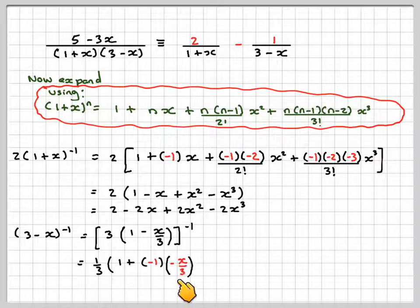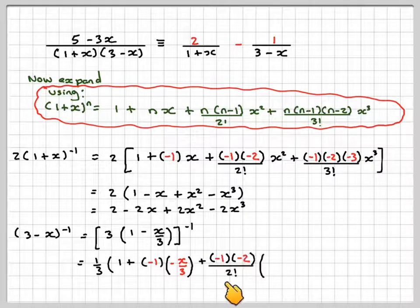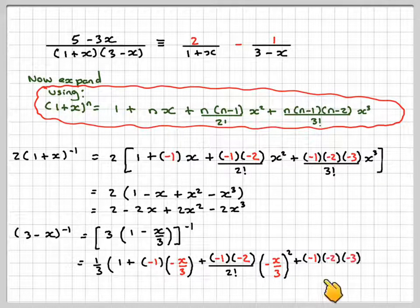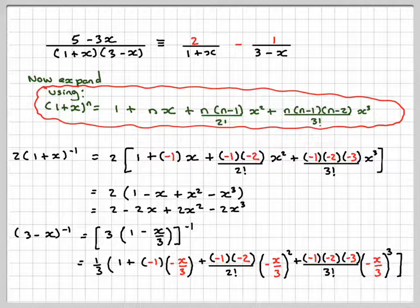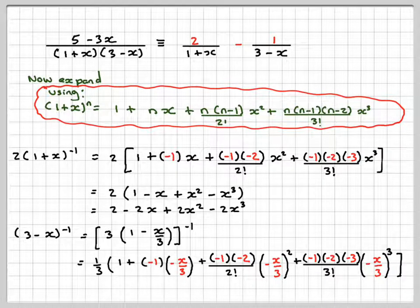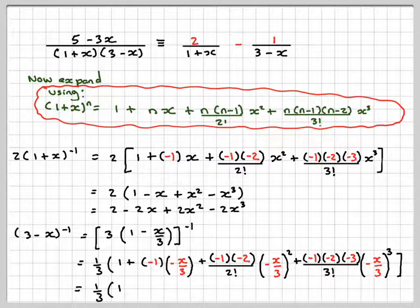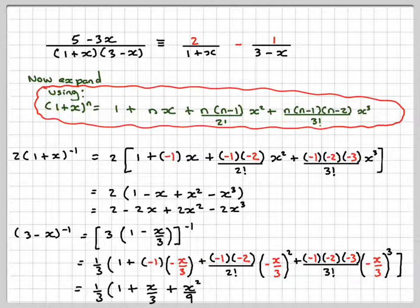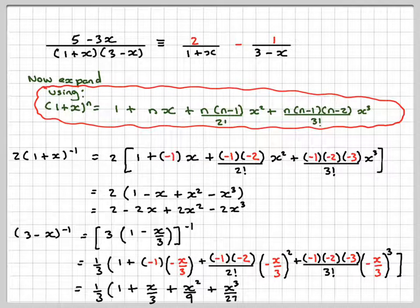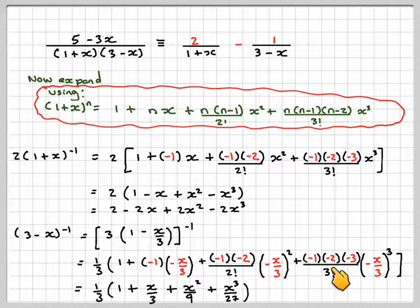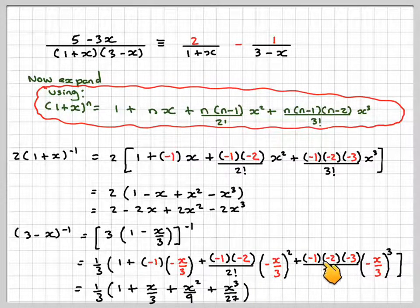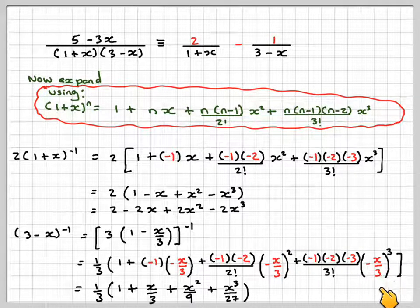Times minus 1 times minus x over 3, plus minus 1 times minus 2 over 2 factorial minus x over 3 all squared, and then minus 1 times minus 2 times minus 3 over 3 factorial minus x over 3 cubed. That's going to give me 1 third times 1 plus x over 3, plus x squared over 9, this will be positive, plus x cubed over 27. Negative times a negative is a positive times a negative is a negative, but when you cube this, you're going to get a negative, which will make the whole thing positive. It's become 6 over 6, so we just need to cube this x cubed over 3 cubed, which is 27.